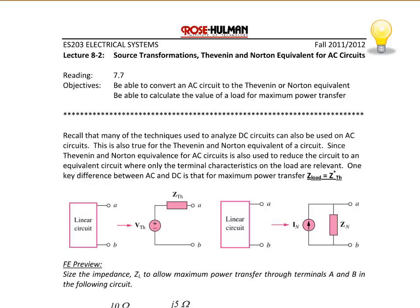Today we will discuss lecture 8-2 on Source Transformations, Thevenin and Norton Equivalents for AC Circuits. This is section 7.7 in your text. At the conclusion of today's lecture, students should be able to convert an AC circuit to the Thevenin or Norton equivalent and calculate the value of a load for maximum power transfer.